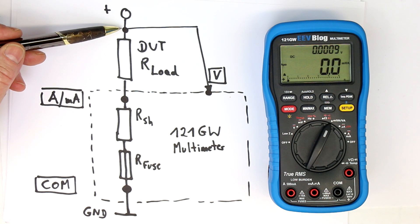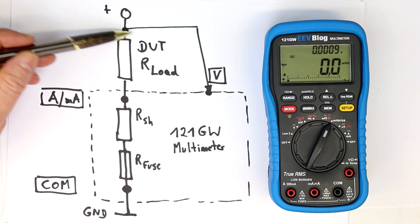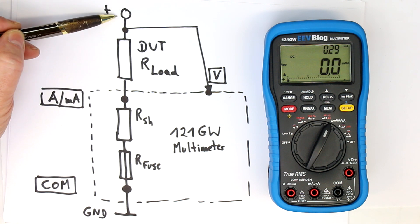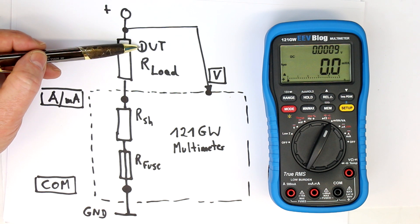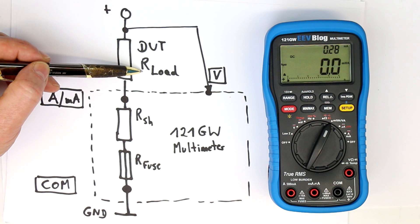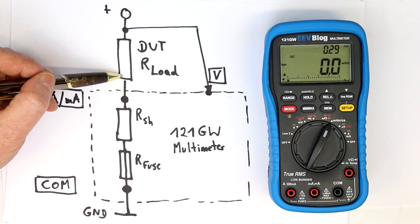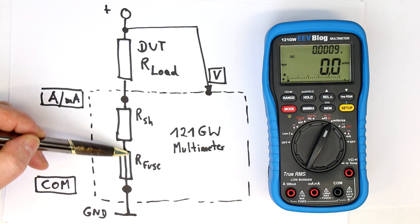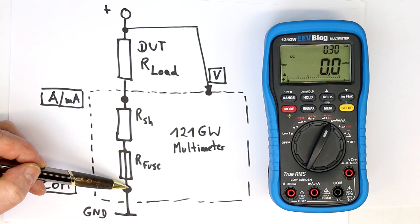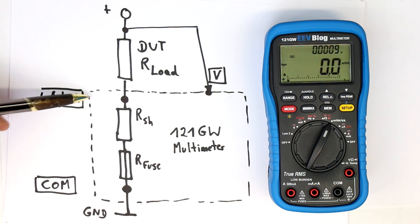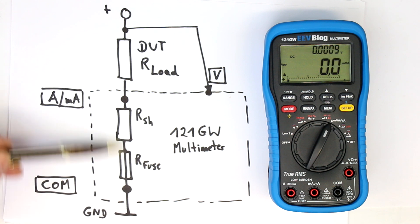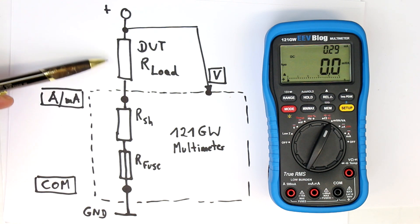This is the setup for how you connect your device under test when doing VA or watts or power measurement. First, power is connected to the upper side of our device under test, which shall be simply called the load resistor. Then the current flows through the shunt resistor, through the internal fuse of the multimeter—by the way, in the dashed box is what's inside the multimeter—and flows out at the common connection down to ground or the negative terminal of the power which supplies the load.